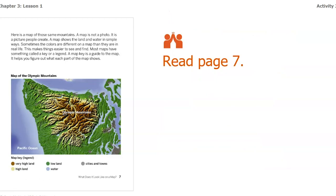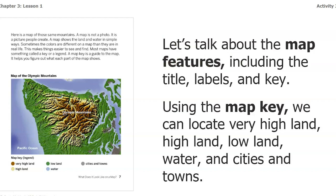Now we're going to read page seven. Here's a map of those same mountains. A map is not a photo — it is a picture people create. A map shows the land and water in simple ways. Sometimes the colors are different on a map than they are in real life; this makes things easier to see and find. Most maps have something called a key or a legend. A map key is a guide to the map that helps you figure out what each part of the map shows. We're going to talk about the map's features including the title, labels, and key.